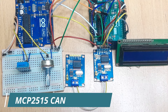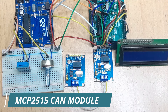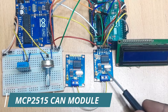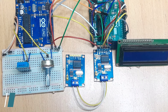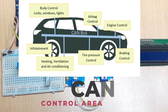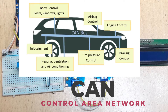Hello everyone. In today's tutorial I'm going to talk about the MCP2515 CAN module. Before going into details about this device, let me first briefly talk about the CAN bus protocol. CAN is the short form for Controller Area Network, which is a message-based protocol designed to allow electronic control units found in vehicles and other electronic devices to communicate with each other in a reliable, priority-driven fashion.